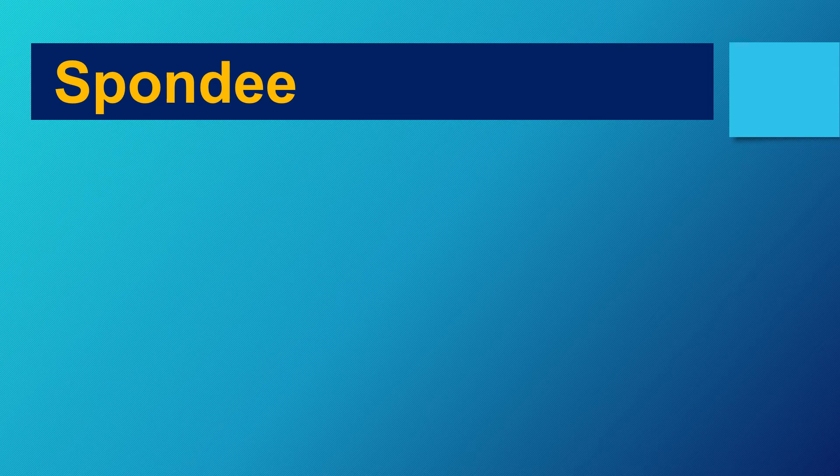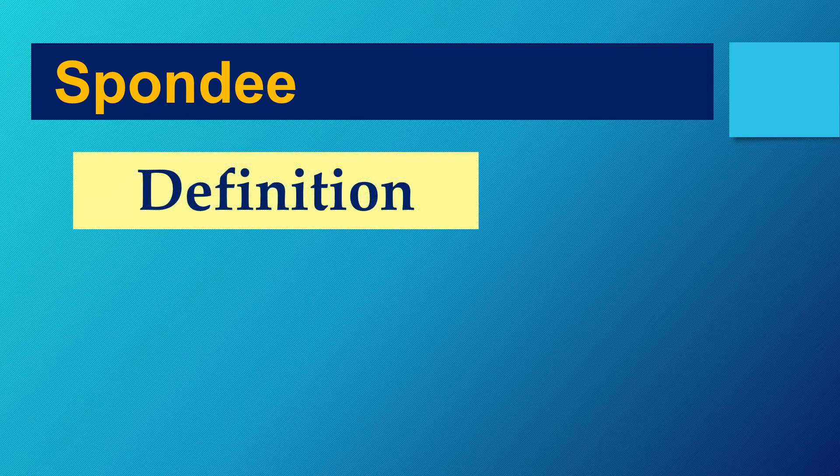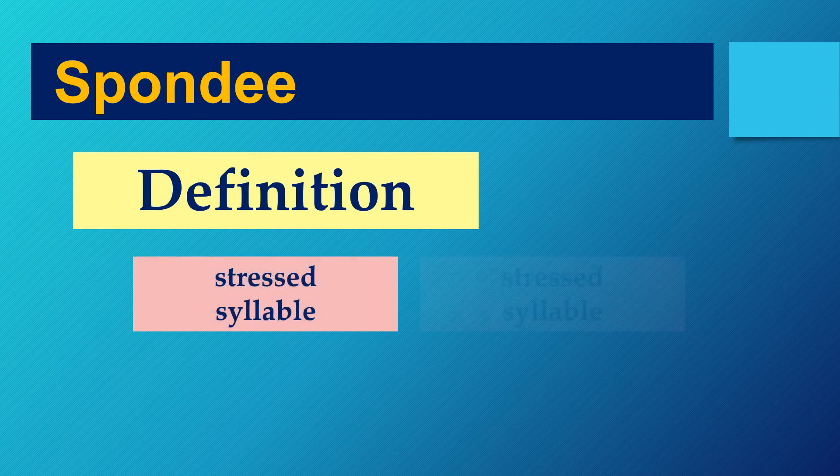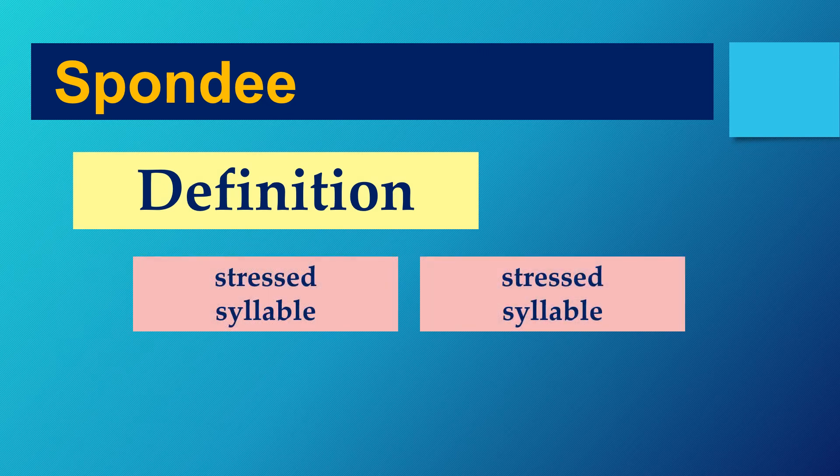Now what's a spondee? This is the last thing we need to find in Elmira today. It's a stressed syllable and then another stressed syllable — two stressed syllables right in a row. That's a spondee. And we're going to find quite a few of these.